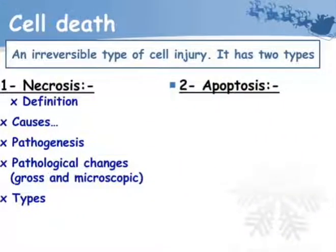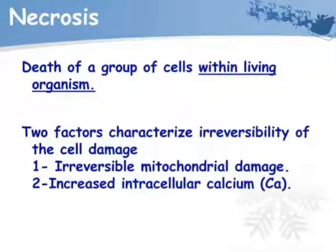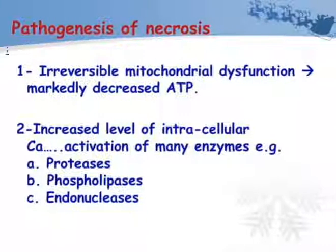Cell death is an irreversible type of cell injury. It has two types: necrosis and apoptosis. Necrosis is the death of a group of cells within the living organism. Two factors characterize the irreversibility of cell damage: irreversible mitochondrial damage and increased intracellular calcium. In pathogenesis of necrosis, irreversible mitochondrial dysfunction leads to markedly decreased ATP and increased intracellular calcium, causing activation of many enzymes such as proteases, phospholipases, and endonucleases.